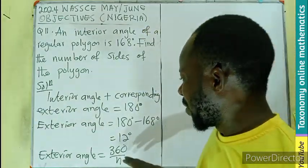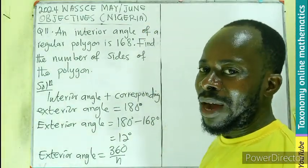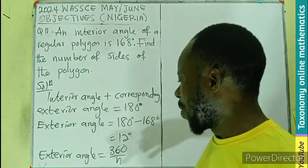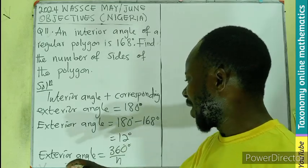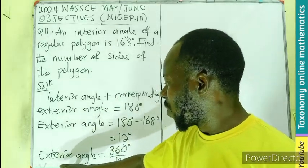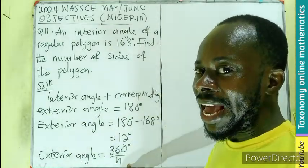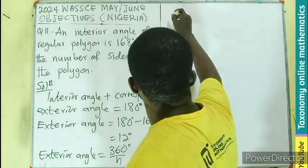So the exterior angle equals 360 degrees divided by n. Now what do we do? We can cross multiply, so I can say 12 degrees equals 360 degrees divided by n.